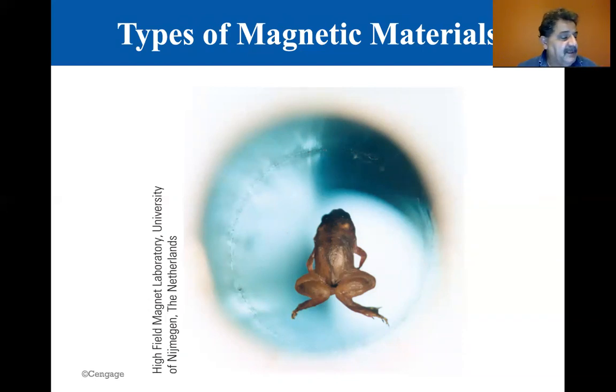This little frog is actually floating. Ordinarily, diamagnetism isn't observed because paramagnetic and ferromagnetic effects are far stronger.